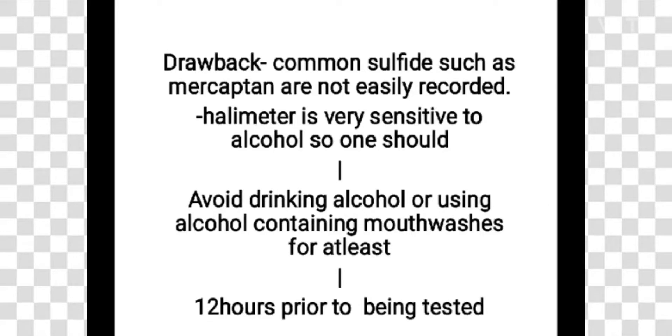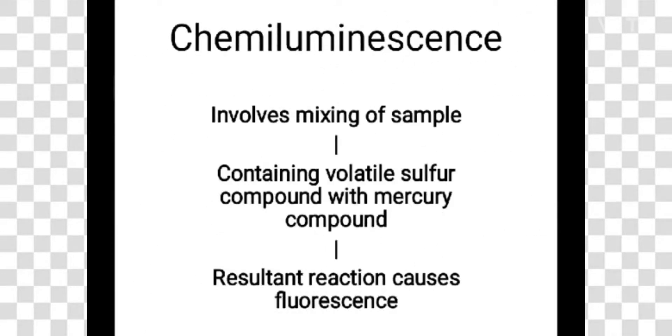Chemiluminescence involves mixing a sample containing volatile sulfur compounds with a mercury compound, and the resulting reaction causes fluorescence.